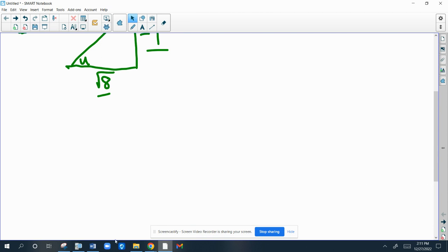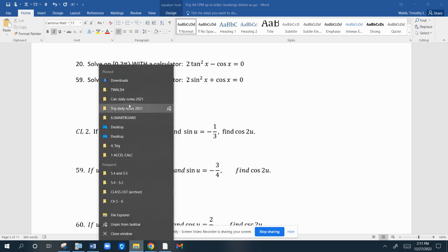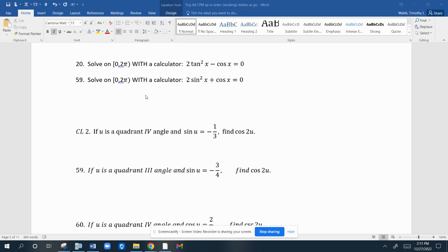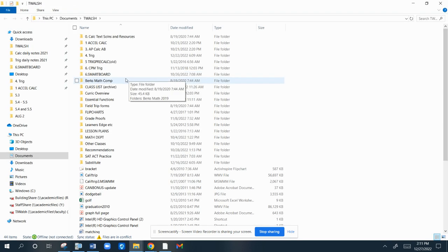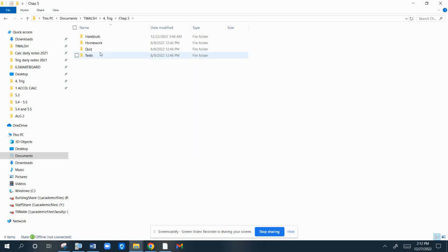The double angle formulas are these. One second. I want you to see them because there's a few for the cosine that you're going to see. So I thought I had it ready for you. I do not. Here we go.